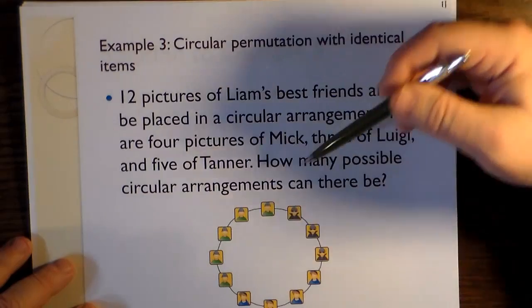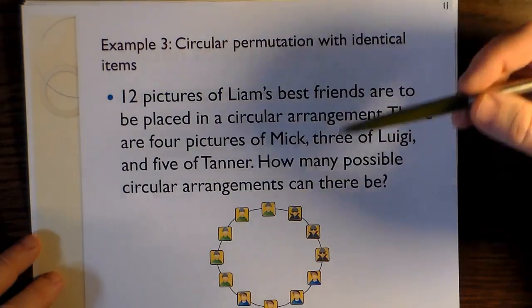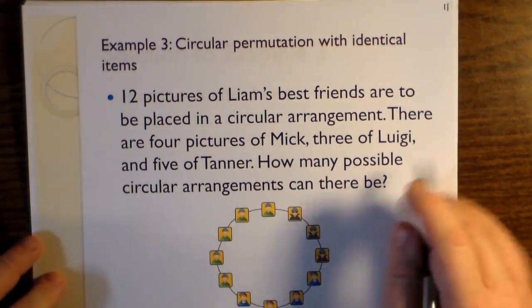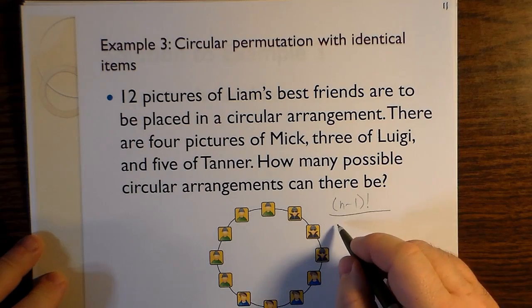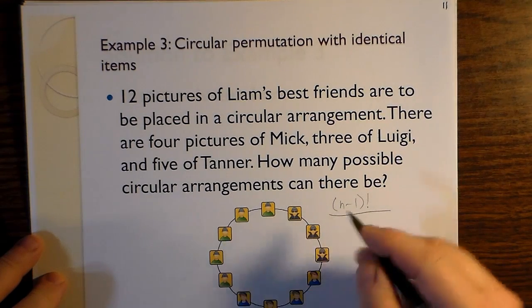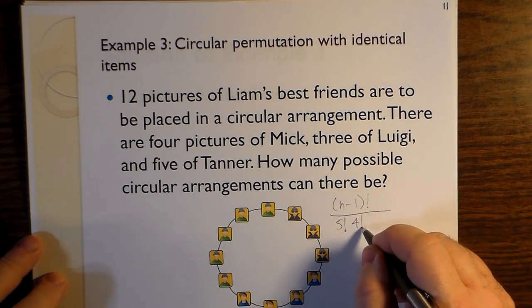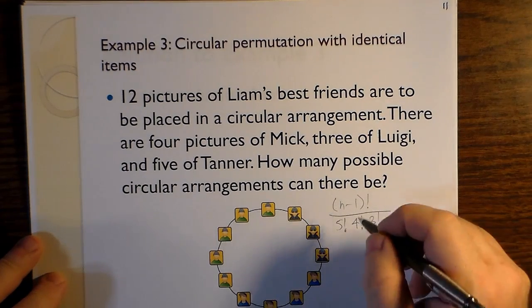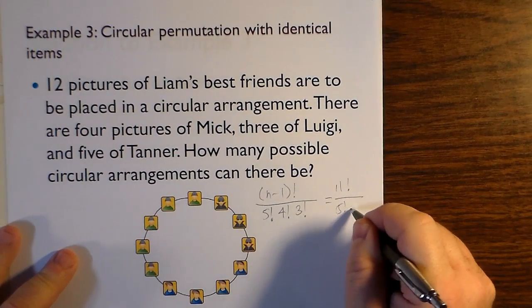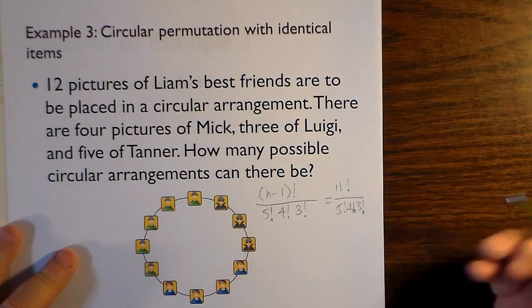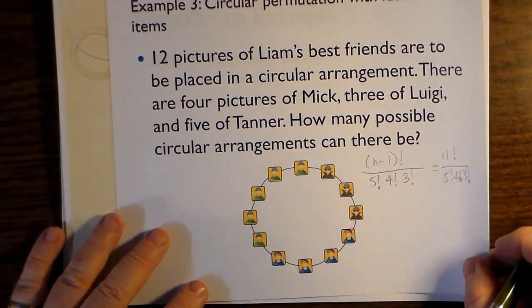And how many ways can we arrange these with respect made to identical objects and numbers of arrangements? So this is a permutation. The first choice is affected by first choosers, but we have identical objects as well. It turns out that you have still n minus one factorial choices. But you have to divide out all of the identical items. So there are five factorial permutations of Tanner. There are four factorial permutations of Mick. And three factorial permutations of Luigi. And really, twelve minus one factorial is really just eleven factorial divided by five factorial, four factorial, three factorial.